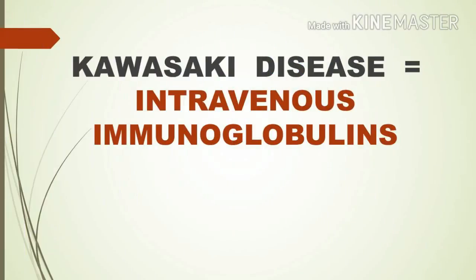Intravenous immunoglobulin is the drug of choice for Kawasaki disease. To recap: tetracycline for cholera, diazepam for delirium tremens, phenobarbitone for epilepsy in pregnancy, chloroquine for malaria in pregnancy, proton pump inhibitors for Zollinger-Ellison syndrome, trimethoprim or nitrofurantoin for UTI in adults, cotrimoxazole for UTI in children, and intravenous immunoglobulin for Kawasaki disease.